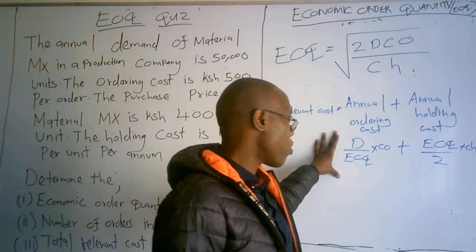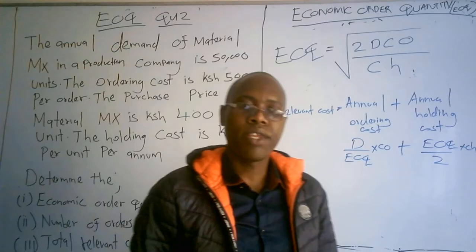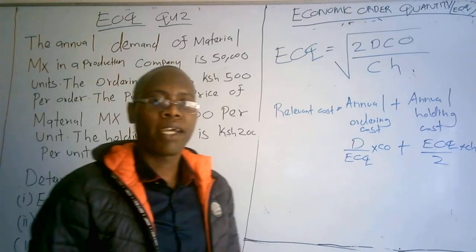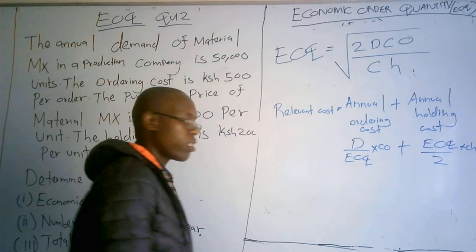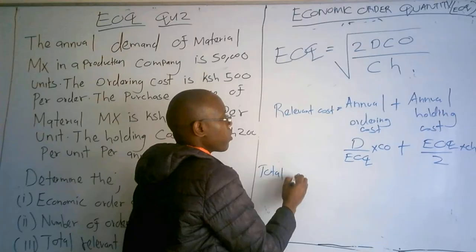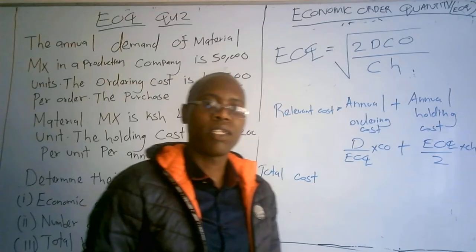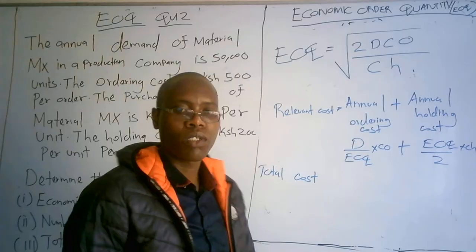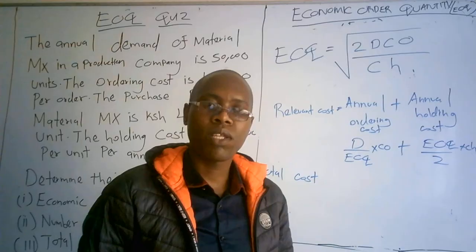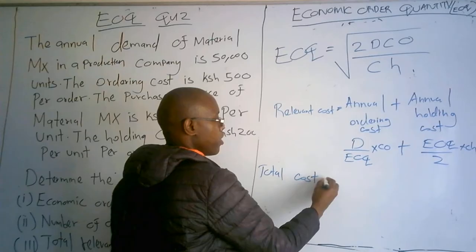If they ask for the relevant cost, you take the annual ordering cost and add the annual holding cost. They may also ask you to calculate the total cost of inventory — not just the relevant cost but the total cost. The formula for total cost of inventory is the relevant cost plus the purchase cost.